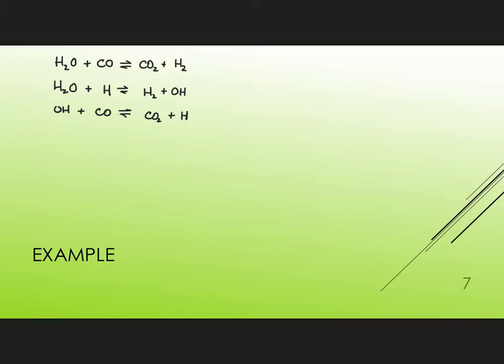Now, let me just first show you that if I number these reactions 1, 2, and 3 to simplify things, what I want to do first is I'm going to take reaction 2 and add it to reaction 3. So if I do that, I have H2O plus H plus OH plus CO makes H2 plus OH plus CO2 plus H. And here, I have an OH on both sides, and so I end up with H2O plus CO makes H2 plus CO2.